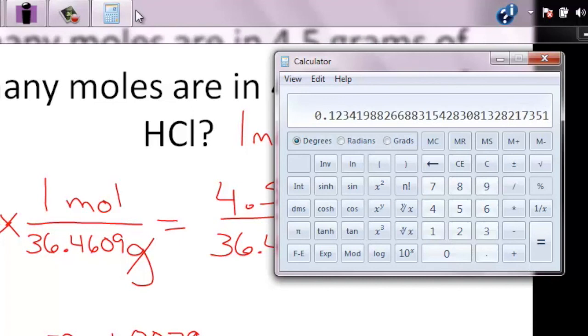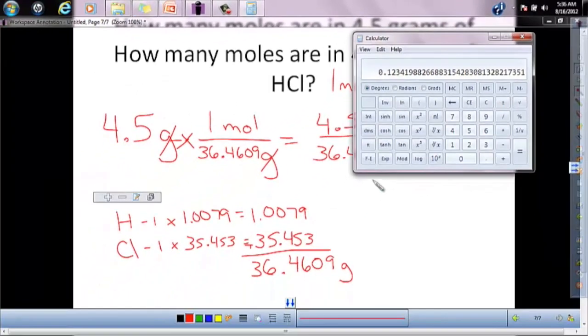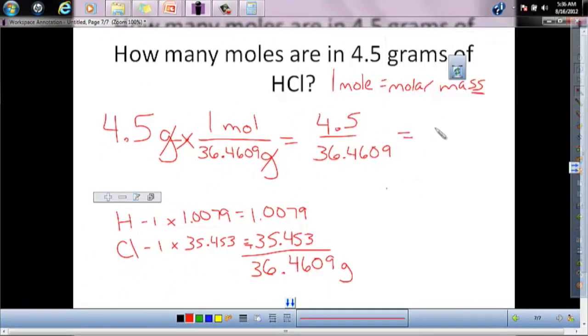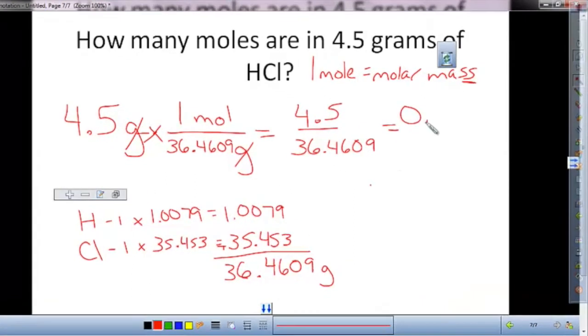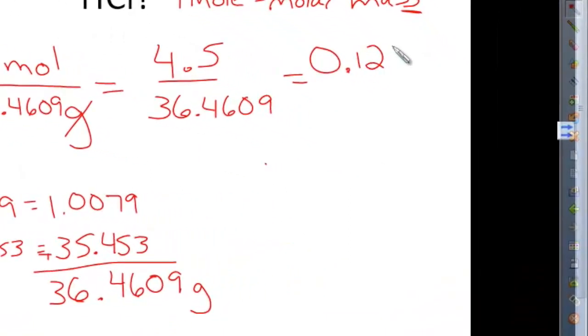Alright, I've got .123. Now your units moles, right? Now sig figs. 4.5, that's 2 sig figs. Here's your first 2 significant. That's 3.5. We won't make that 2 round up, so we can just drop that off the end. So .12 moles.